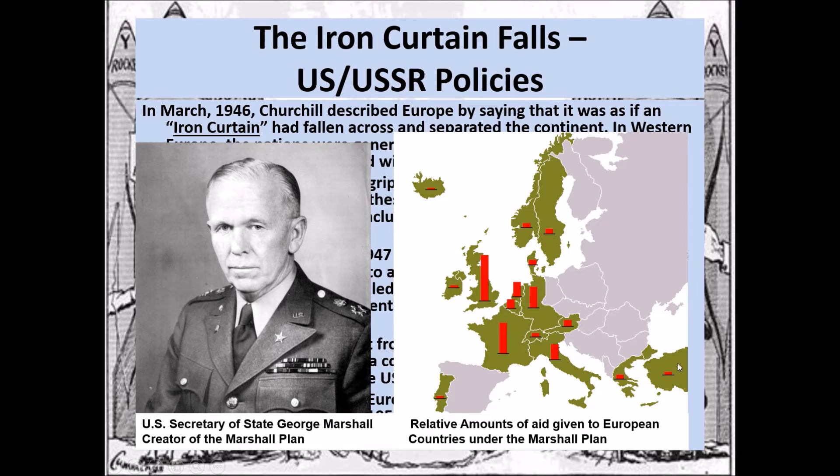The countries that did not receive Marshall Plan aid were the eastern European countries controlled by the Soviets — the Soviets discouraged them from accepting any aid.